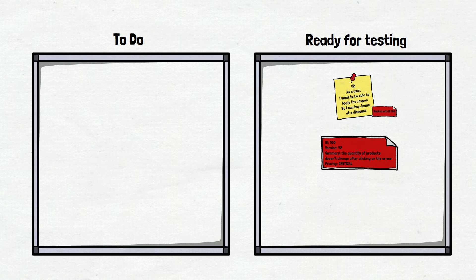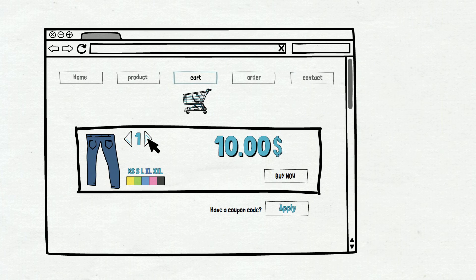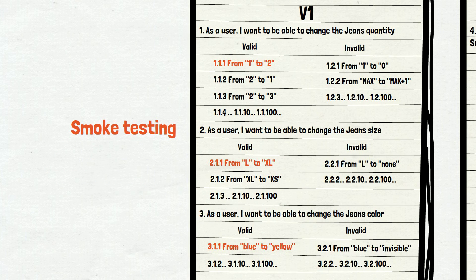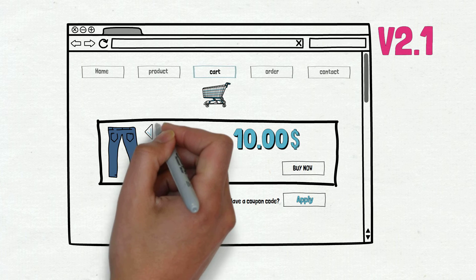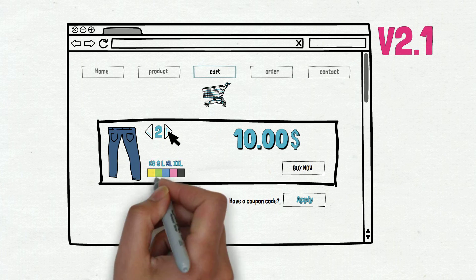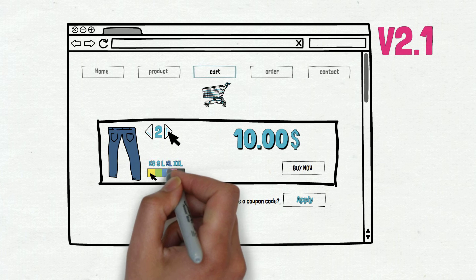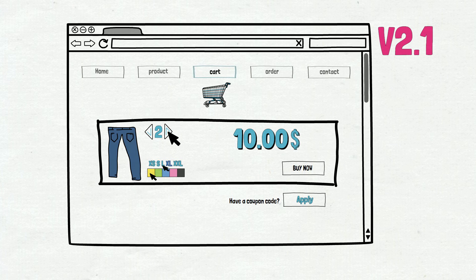We need to go back to the website. This time we can see the version is 2.1 — the primary version is the same as version 2, but the subversion changes when a bug is fixed or a story is developed. Where do we start testing this time? We start with the same smoke tests as before — the same three test cases. We click on the arrow and this time the quantity is changed. Then we run two more smoke checks: we change the color of the jeans and then change the size. All three test cases successfully passed.